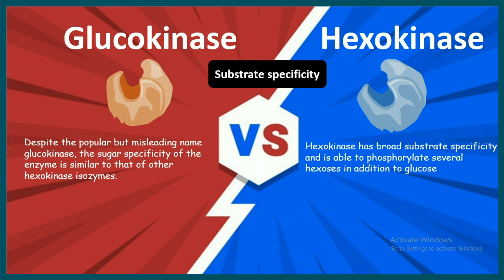In terms of substrate specificity, they have very similar substrate specificity. The name glucokinase is a bit misleading, because it kind of suggests it only acts on glucose, which is not true — it acts on any kind of hexose sugar.